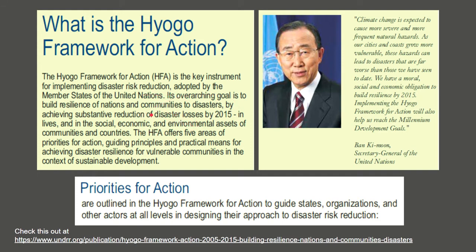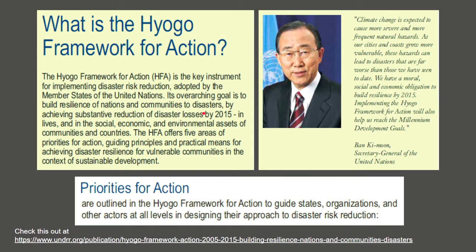The Hyogo Framework for Action is a key instrument for implementing disaster risk reduction, adopted by the United Nations. Its overarching goal is to build resilience of nations and communities to disasters by achieving substantive reduction of disaster loss by 2015. The priorities for action guide states, organizations, and other actors at all levels in designing their approach to disaster risk reduction. Then-UN Secretary-General Ban Ki-moon stated that climate change is expected to cause more severe and frequent natural disasters, and we have a moral, social, and economic obligation to build resilience across all countries by 2015.